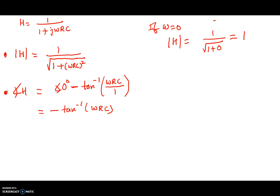For the phase angle at ω = 0: since ω equals 0, the arctangent of 0 is 0 degrees. So if ω equals 0 (DC), we have a gain of 1 — meaning the output voltage equals the input voltage — and a phase angle of 0 degrees, meaning there is no phase shift between the output and the input.